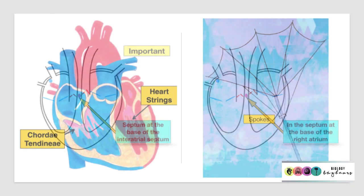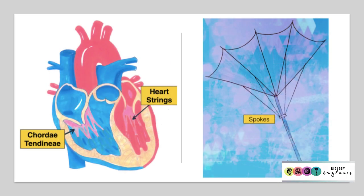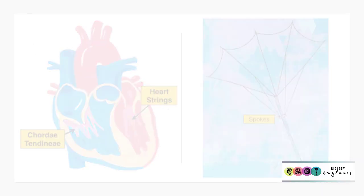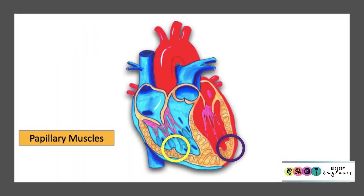To finish up, let's look at some labels that are often forgotten by students. Don't forget to mark in the chordae tendineae — the heartstrings. The role of the heartstrings is to prevent the valves, or the flaps of the valves, from flying up in the wrong direction. Also, don't forget to draw in the papillary muscles — the heartstrings are attached to those.